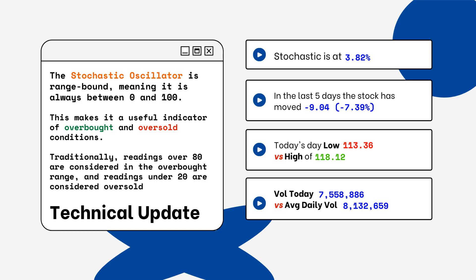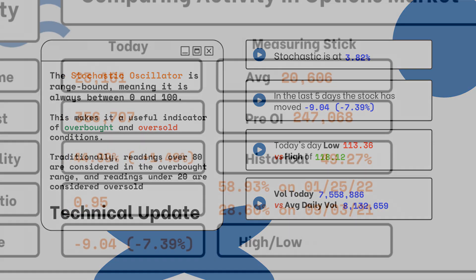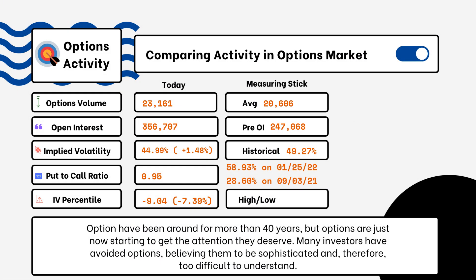We've also provided today's volume of shares traded and also the average daily volume. You want to see how much volume is being traded and if it is above or below the average daily volume level. This tells you how relevant the move is from the stock today.